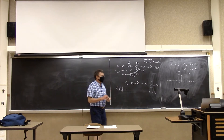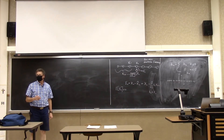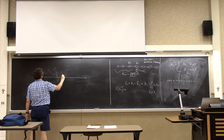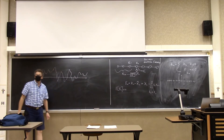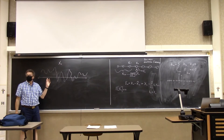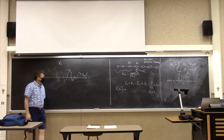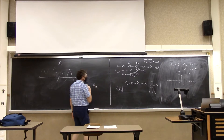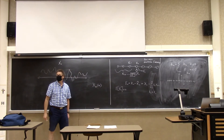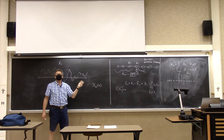Let me go back over what it means to be stationary, because stationarity is a very subtle and important concept. You have a signal, but it's not a fixed signal — it's a random process. When I draw the signal, I'm drawing what people call a sample path. It's like you flip a coin and this is the result of an outcome of the experiment.